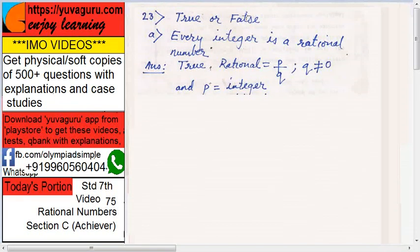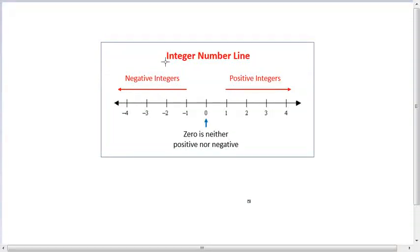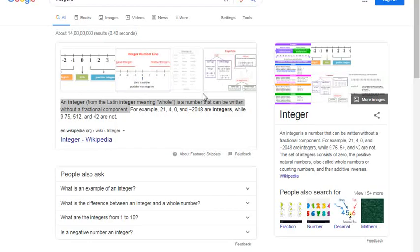State true or false: Every integer is a rational number. True. Why? What is integer? See this number line - all these numbers 1, 2, 3, 4 over here up to infinity and -1, -2 over here up to infinity, all are integers. Why? Because an integer is a number which can be written without a fraction component.